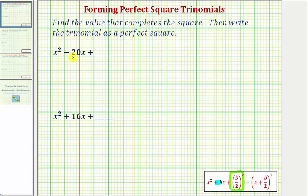For our first example, x squared minus 20x, notice how b would be equal to negative 20 because we have minus 20x. Therefore the constant term c must be equal to negative 20 divided by two squared.